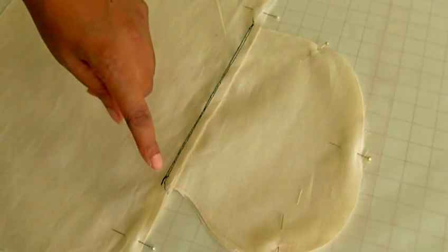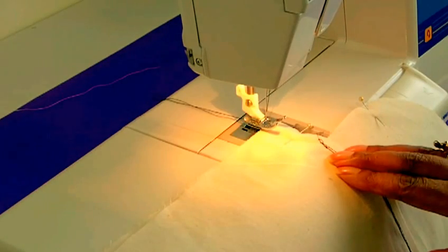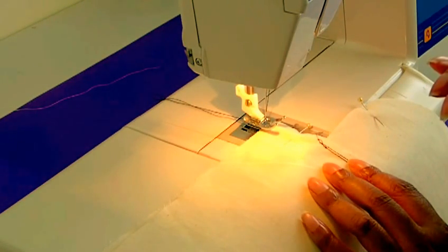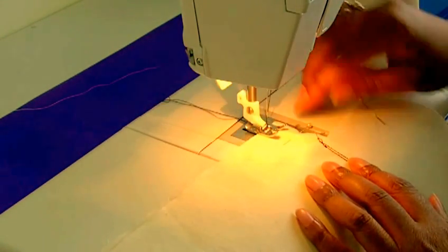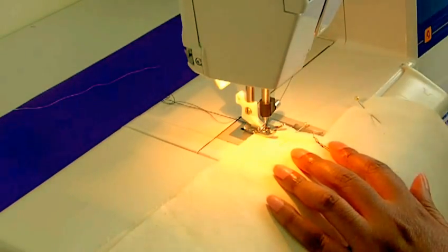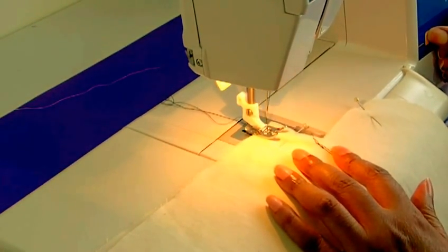I'm now actually going to be doing a 1.5 centimeter seam allowance, and I believe that's five-eighths of an inch. So I'm matching that up here with my plate here. And needle down, and a few stitches forward, back stitch.